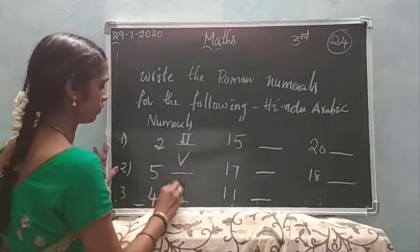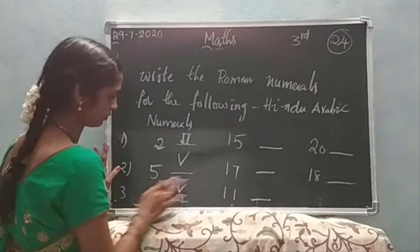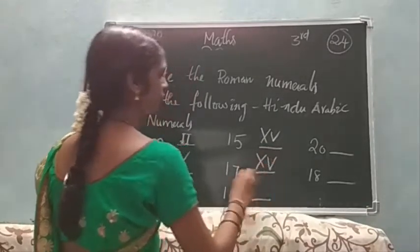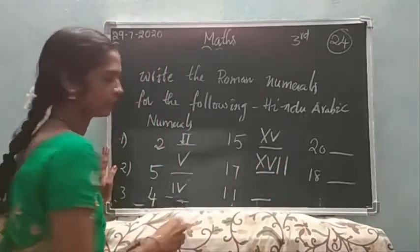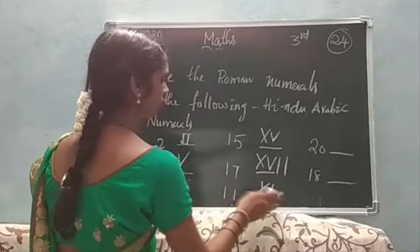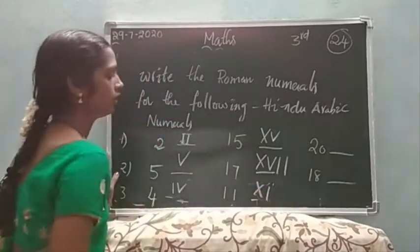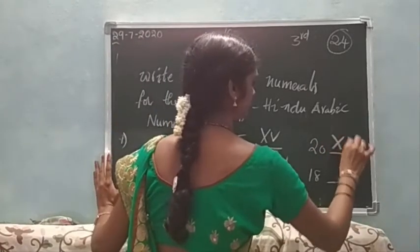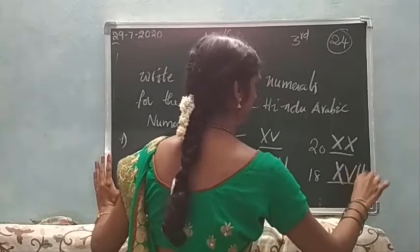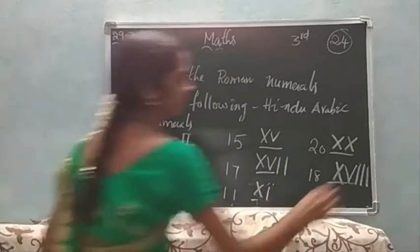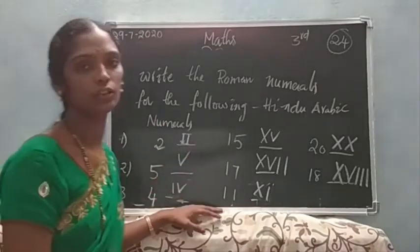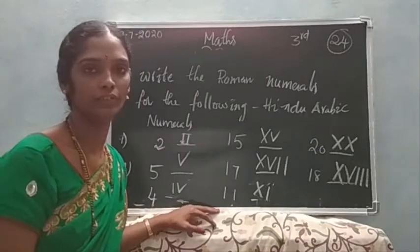Then 5, 4. You can write on the left side. Then 15, 10, and 5. 17: 10, 5, and then 15, 16, 17 - you can write like this. 11: 10 and 1. 10, 10 and 1 here. 12, 20 - double X. 18: 10, 15, 16, 17, 18. This is the way of converting Roman numerals to Hindu-Arabic numbers.